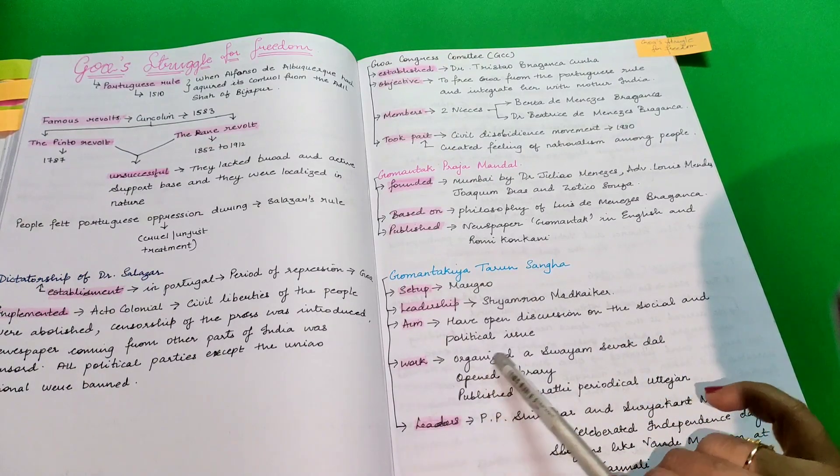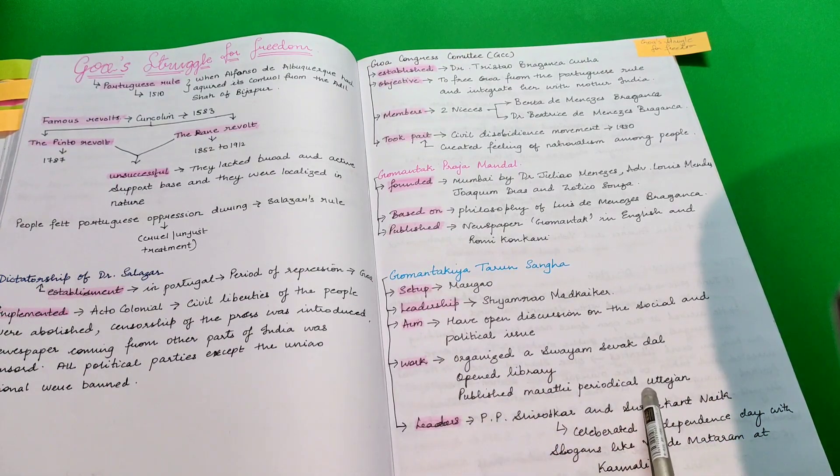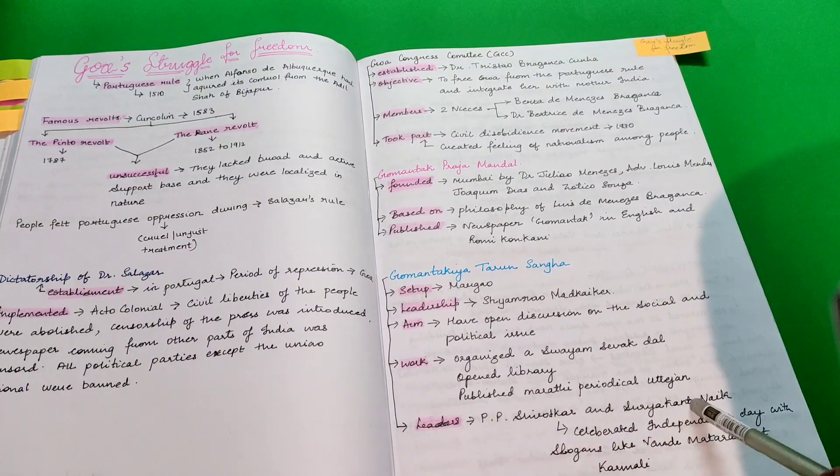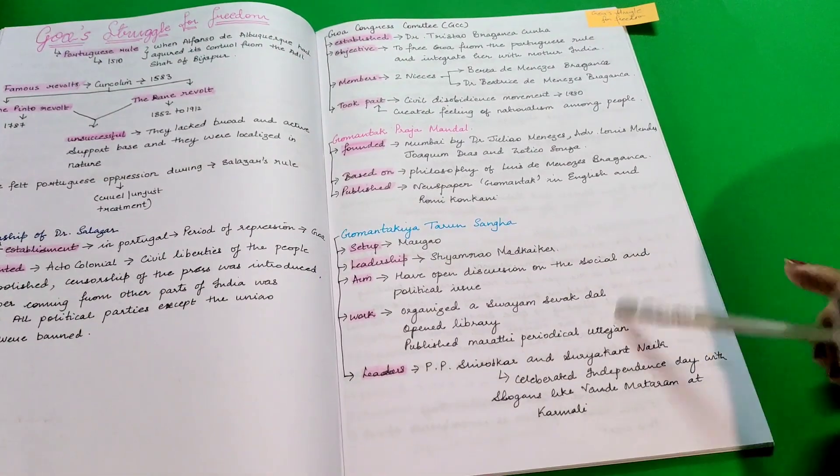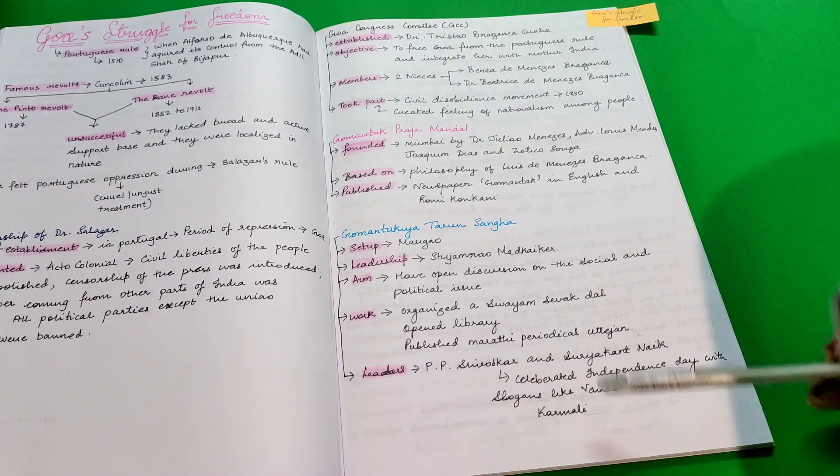They organized a Swayam Sevagdal, open library, published Marathi periodical Uttejan. Leaders like P.P. Shirodkar and Suryakan Naik celebrated Independence Day with slogans like Vande Matram at Karmali.